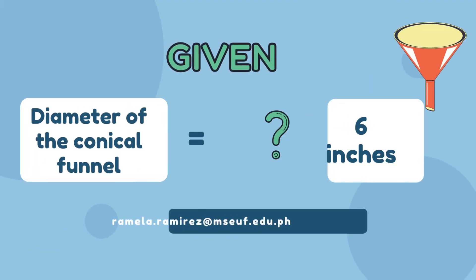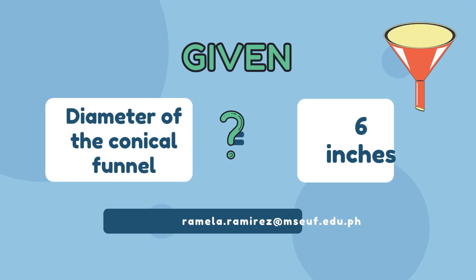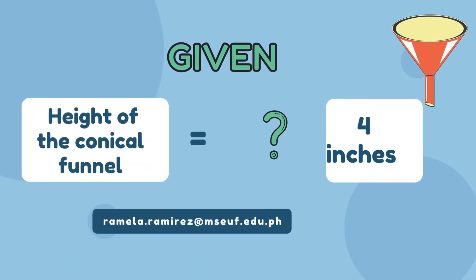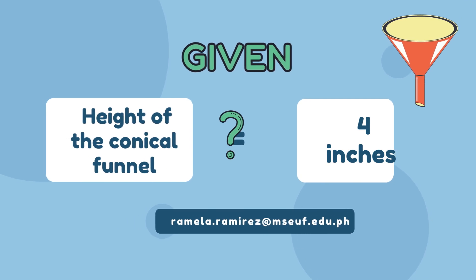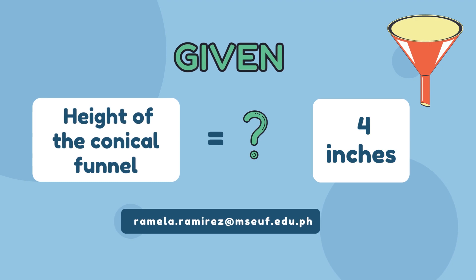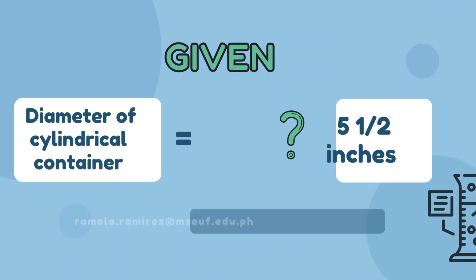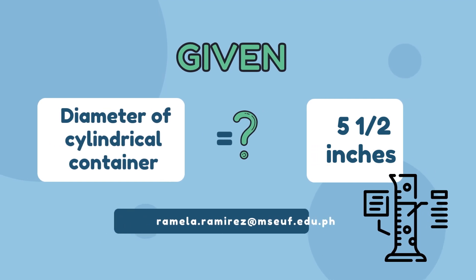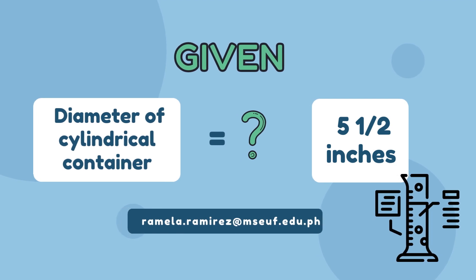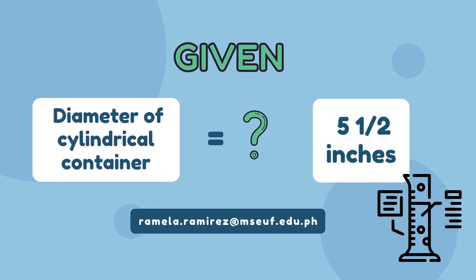Based on the problem, the diameter of the conical panel is 6 inches and the height of the conical panel is 4 inches. The diameter of the cylindrical container is 5 and a half inches, according to the problem.